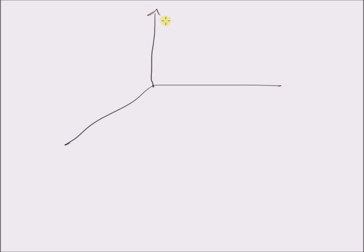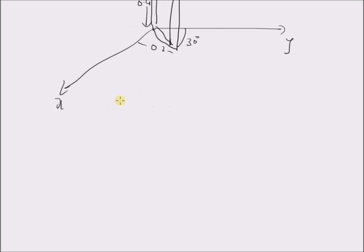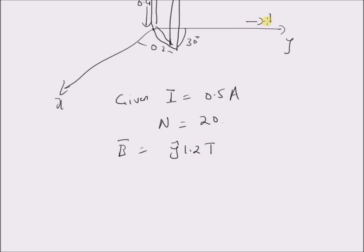Consider the following arrangement. These are the y-axis, the x-axis, and the z-axis. We have a rectangular loop with one of its sides hinged to the z-axis, and the plane of the rectangle is at an angle of 30 degrees to the y-axis. This angle is 30 degrees from the y-axis, and there are 20 turns. The dimensions are 0.2 meters in one direction and 0.4 meters in the other direction. Given a current of 0.5 amperes and 20 turns, the magnetic field applied is y-cap 1.2 tesla — that is, the magnetic field is in the direction along the positive y-axis.